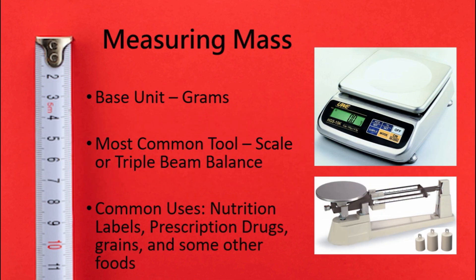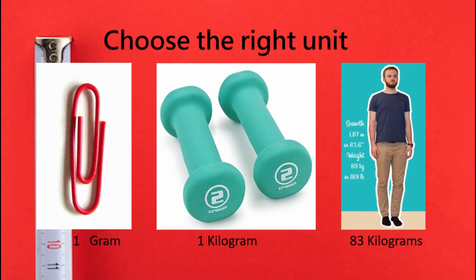For measuring mass, we typically use grams in the metric system. The most common tools are a digital scale or a triple beam balance. Common places you might already see metric mass include nutritional labels showing 5 grams of sugar, prescription drugs, some grains for sale, and a couple of other foods. To help understand the basic units: 1 gram is about the mass of a paper clip, a kilogram is about a small dumbbell, and a person weighing about 183 pounds is approximately 83 kilograms — in kilograms that seems super light, but it's just a different way to measure.